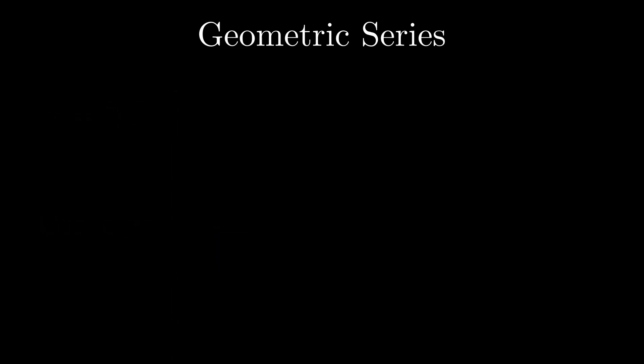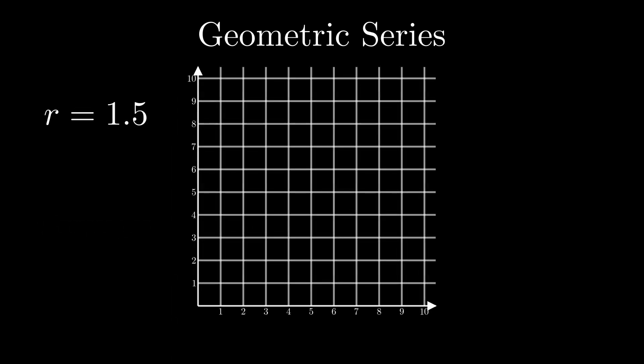To see this visually, let's look at an exponential graph, which really is what a geometric series is, an exponential function. For r values greater than 1, the series has an exponential graph that always goes up, but if you change the common ratio to 0.5, let's say, we see that it converges to the horizontal asymptote, because it's a decreasing exponential function.